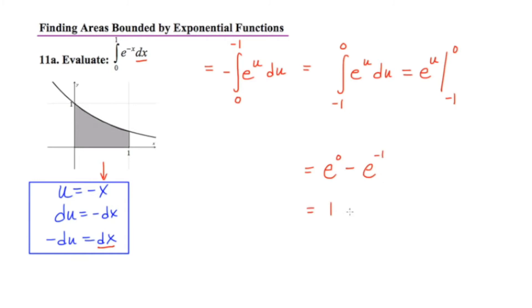Well, e to the 0 is just 1, and then e to the negative 1 is just 1 over e. So we could leave our answer like this, or we could rewrite this as a single fraction with common denominator e.